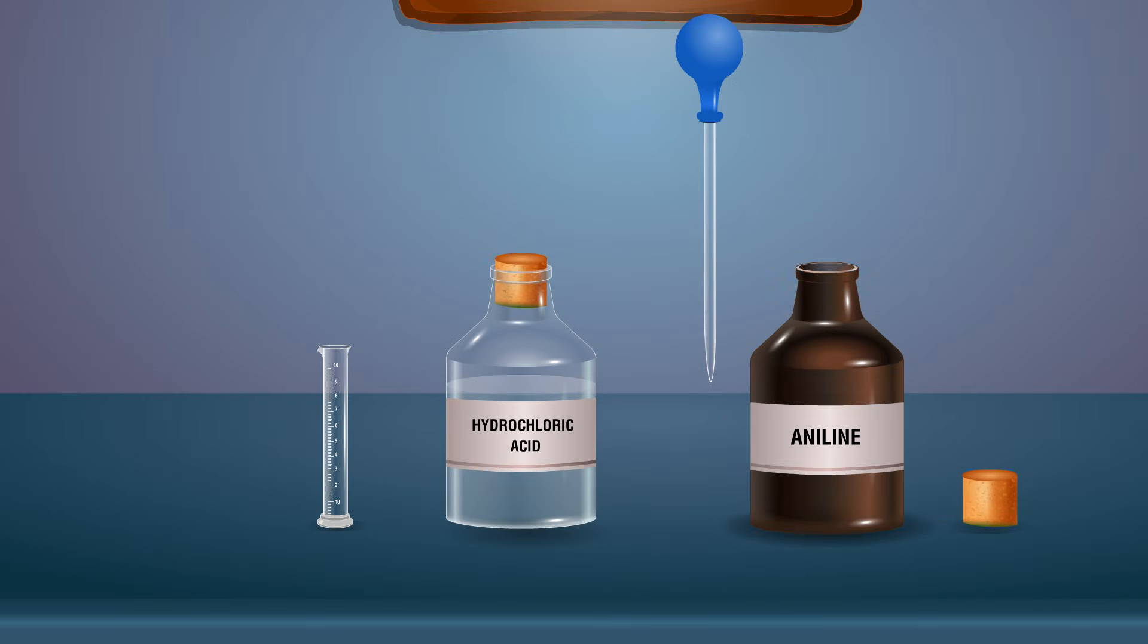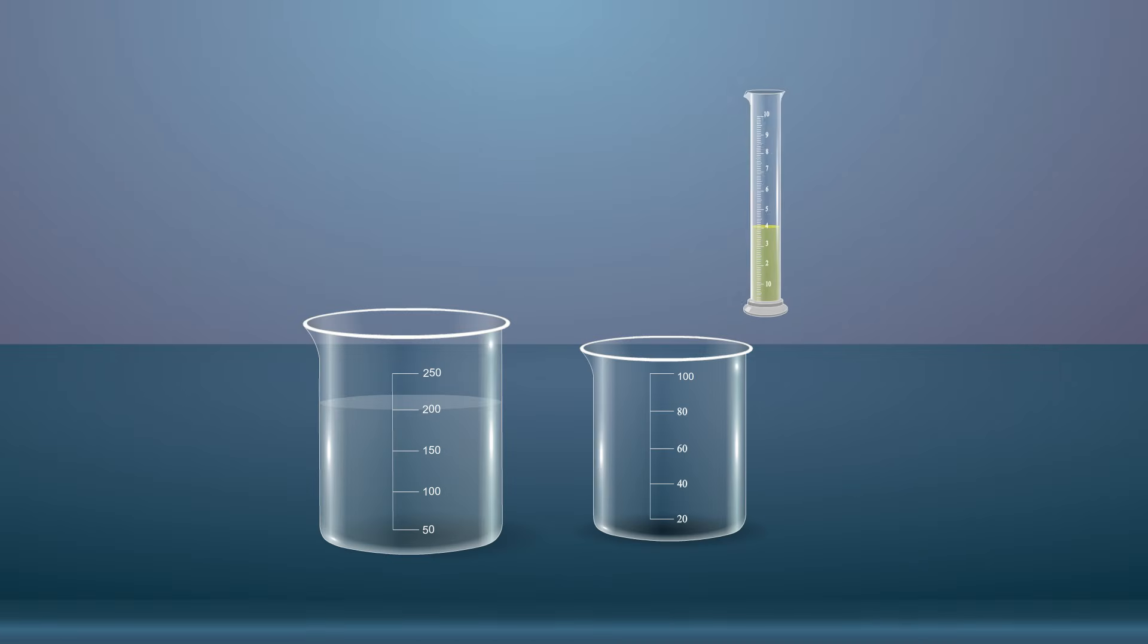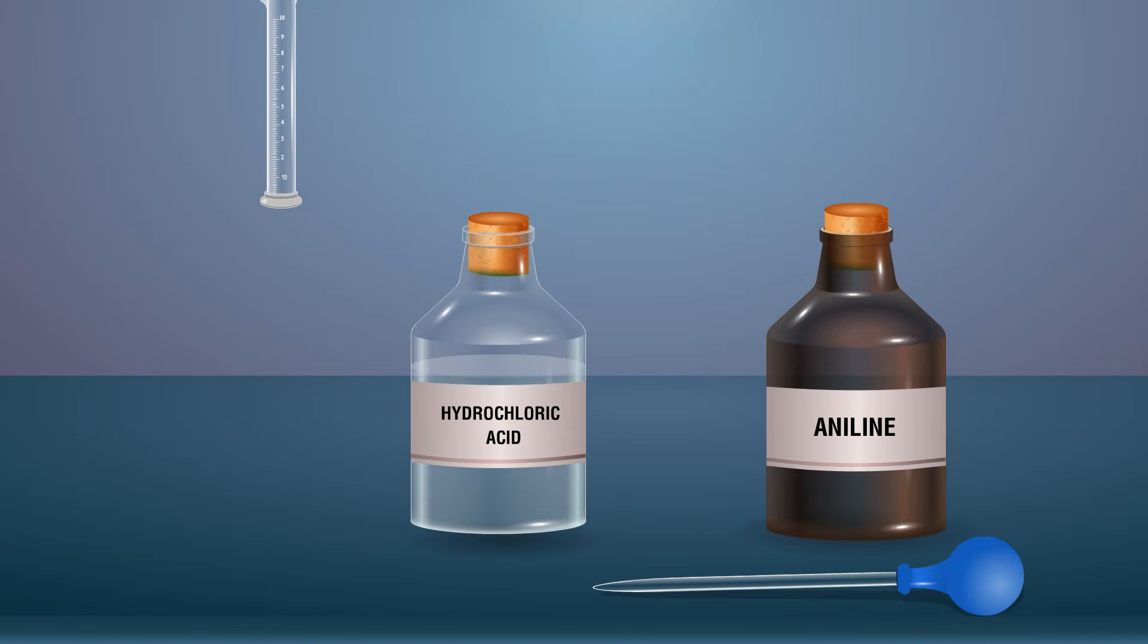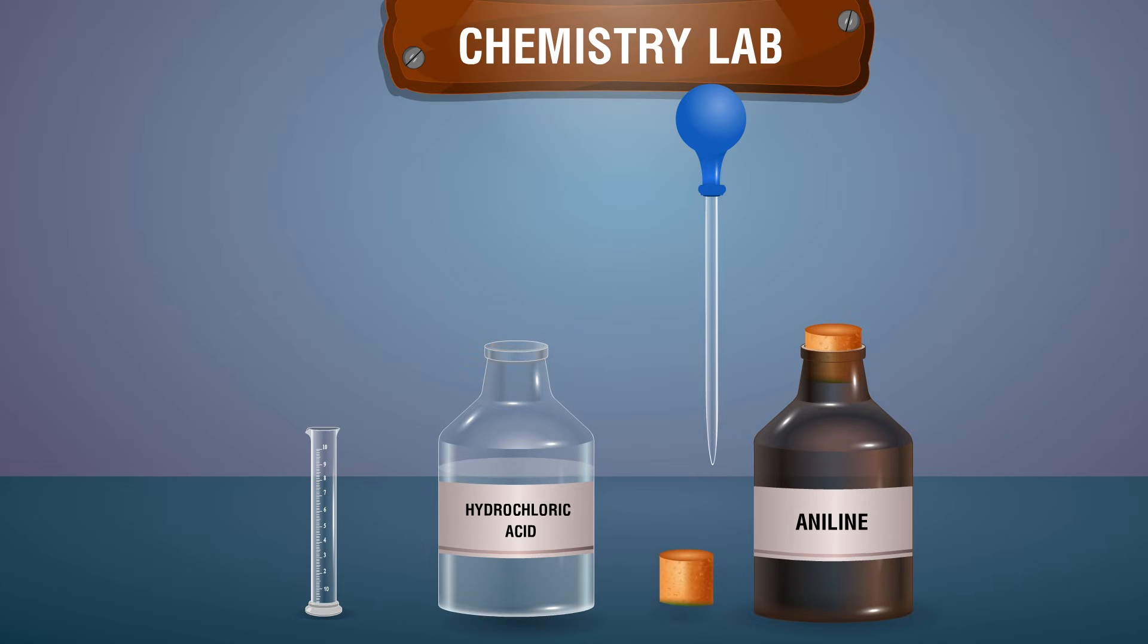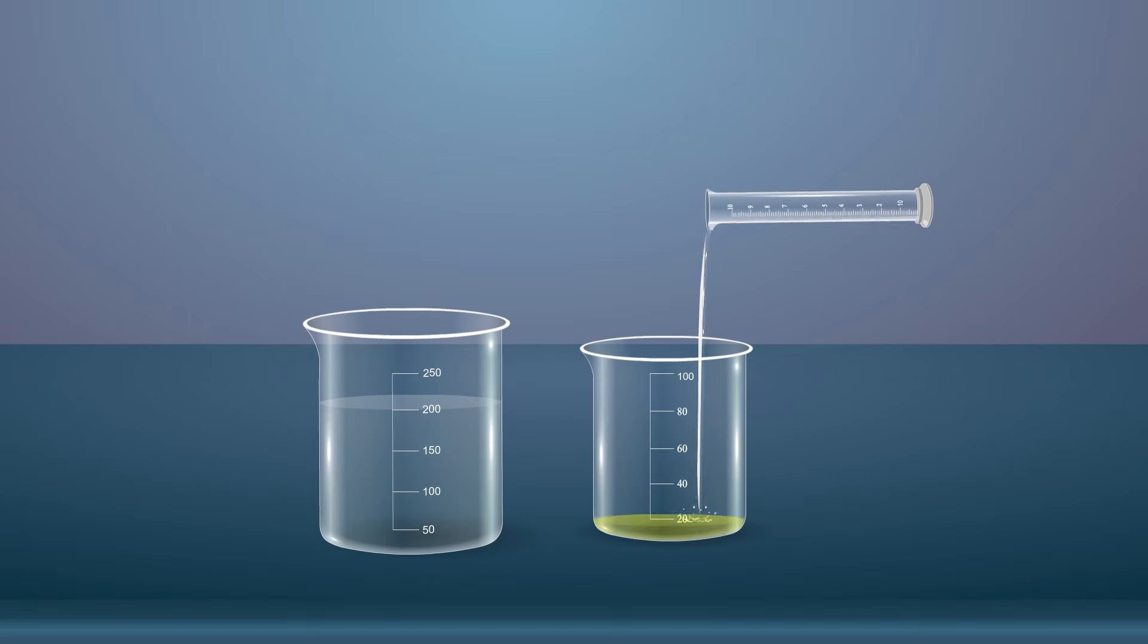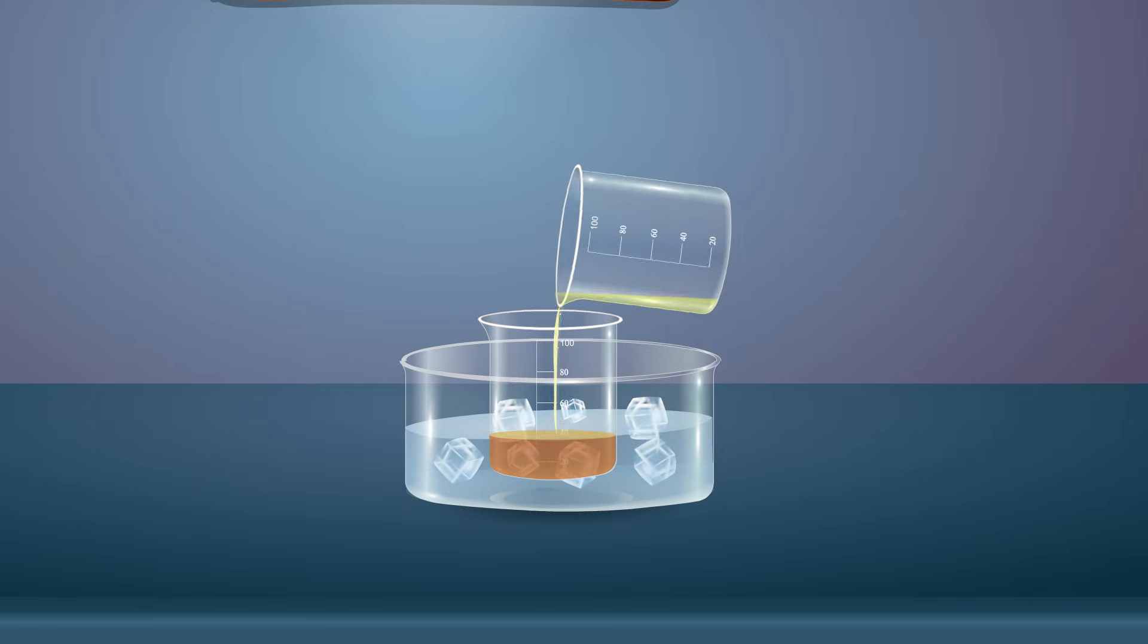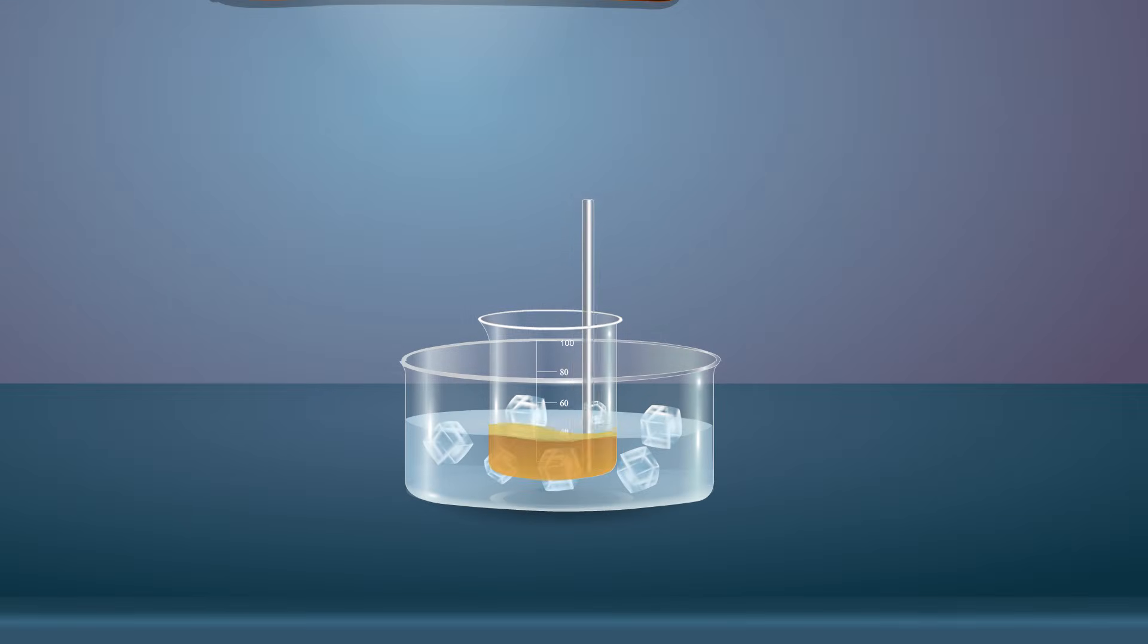Take 4 milliliters of aniline using a dropper, transfer it into a measuring cylinder and pour it into the beaker. Take 4 milliliters of hydrochloric acid with the dropper, transfer it into a measuring cylinder and pour it into the beaker. Mix the aniline solution to benzene diazonium chloride solution slowly by stirring constantly with a glass rod back to yellow color.